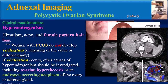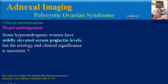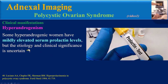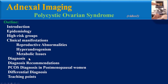Other causes of hyperandrogenism to investigate include ovarian hyperthecosis or an androgen-secreting neoplasm of the ovary or adrenal gland. Some hyperandrogenic women have mildly elevated serum prolactin levels, but the etiology and clinical significance is uncertain. However, prolactin levels in excess of 40 ng per deciliter should prompt evaluation for other causes.